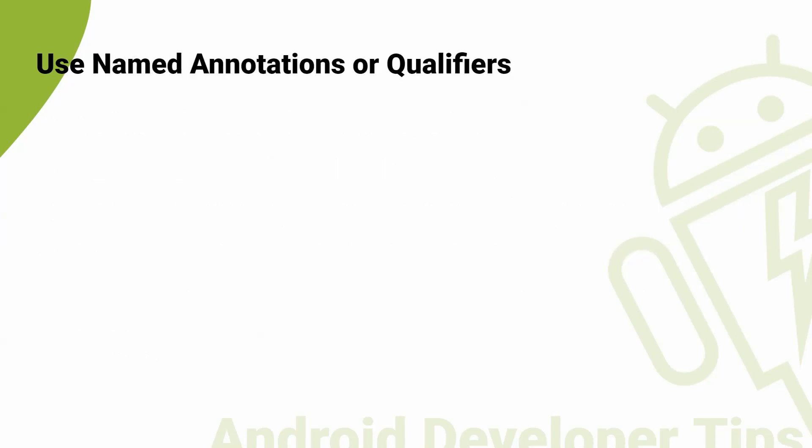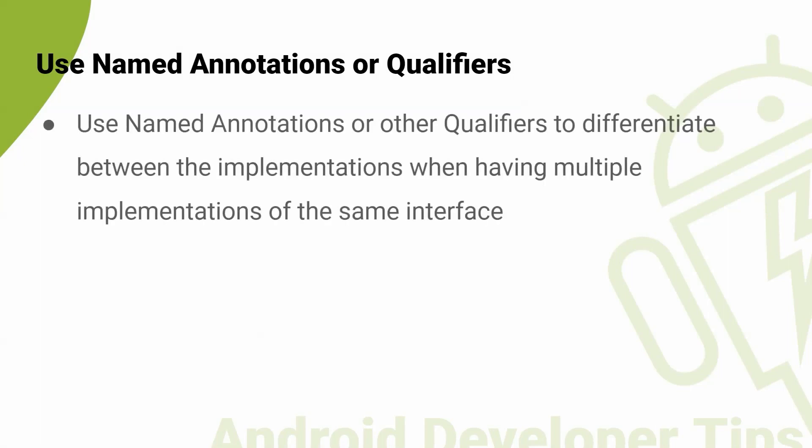Use named annotations for multiple implementations. In some cases, you may have multiple implementations of the same interface. In these cases, it can be helpful to use named annotations to differentiate between the implementations.